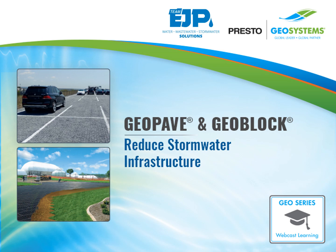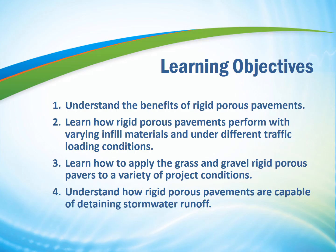The focus of today's presentation is going to be on rigid porous pavements with both gravel and topsoil surfaces for effective stormwater control. We're going to start with an understanding of the benefits of using a porous pavement system and how rigid systems can perform under varying traffic loading conditions. Then we'll talk about how both aggregate surface and vegetated or grass surfaces can work for porous pavements and why you may choose one over the other. Finally, we'll get into how porous pavements are capable of detaining stormwater runoff and helping achieve your green building goals on site.